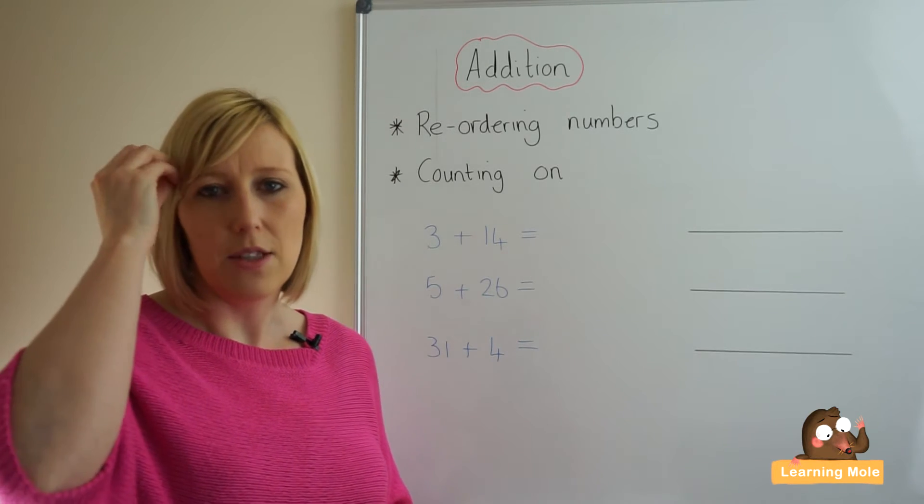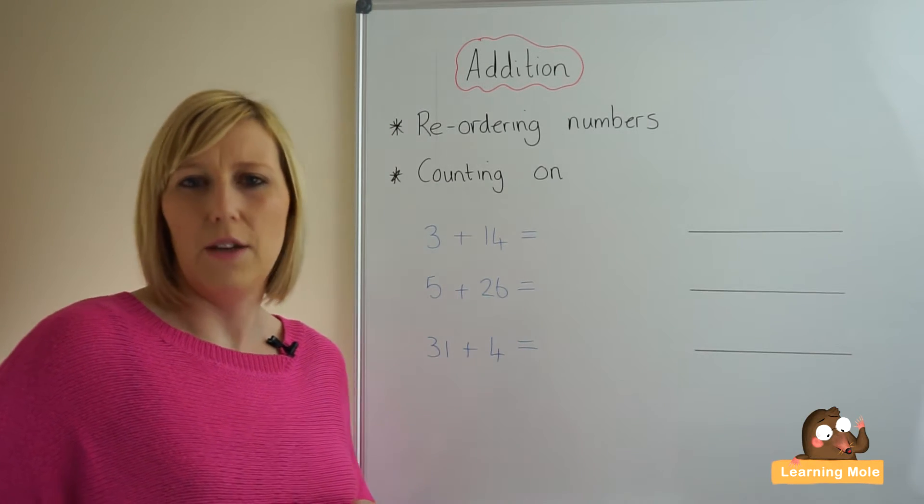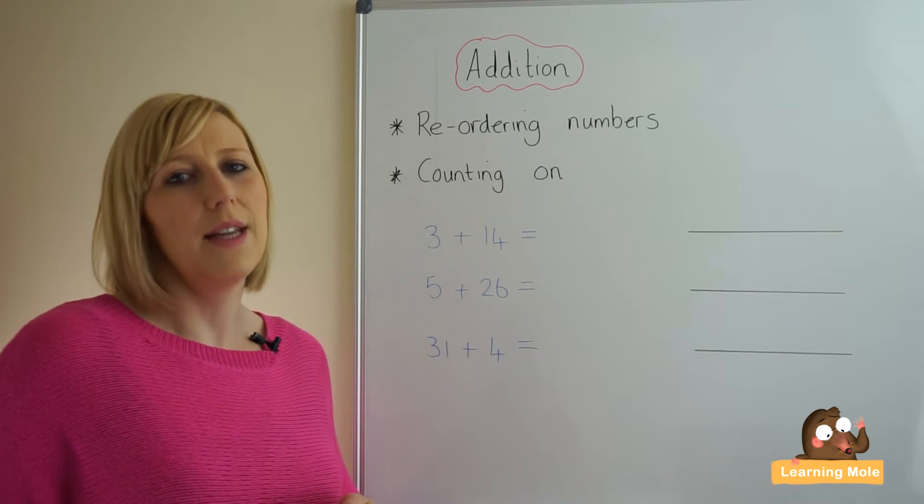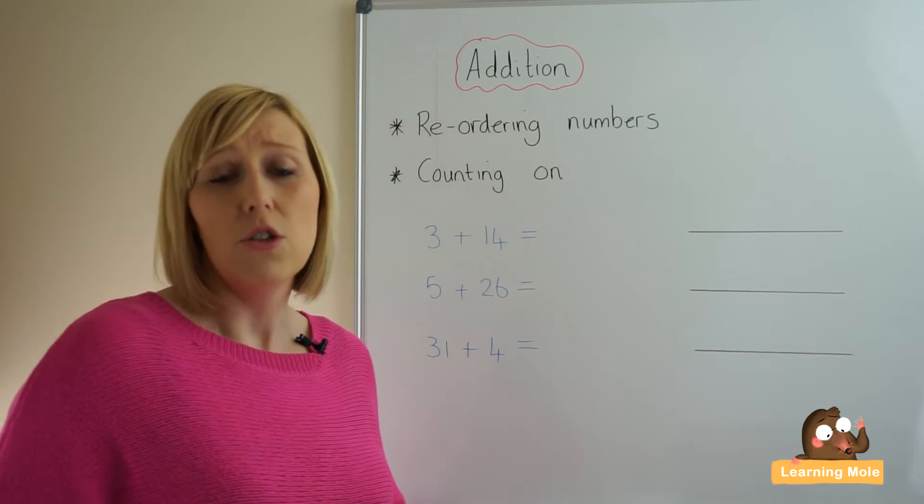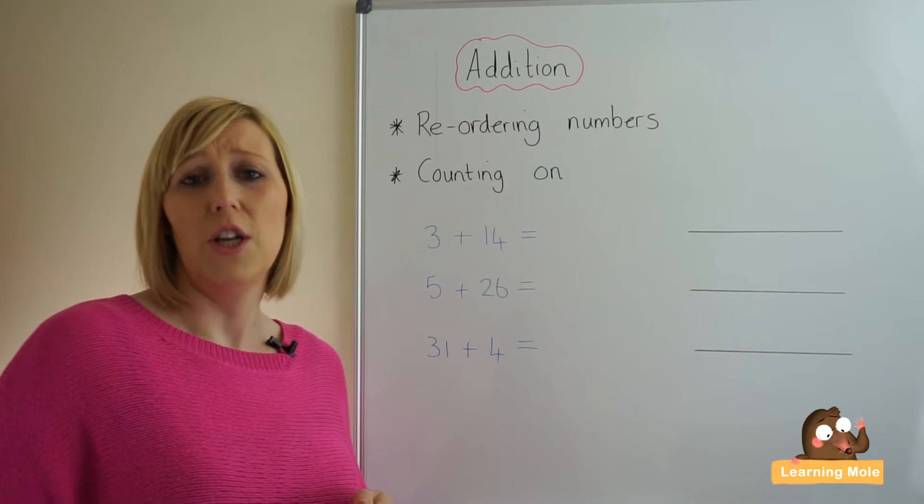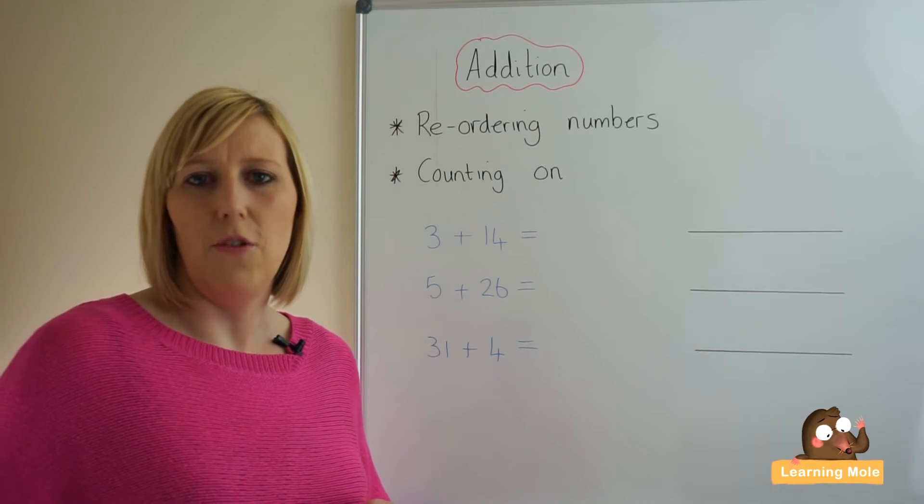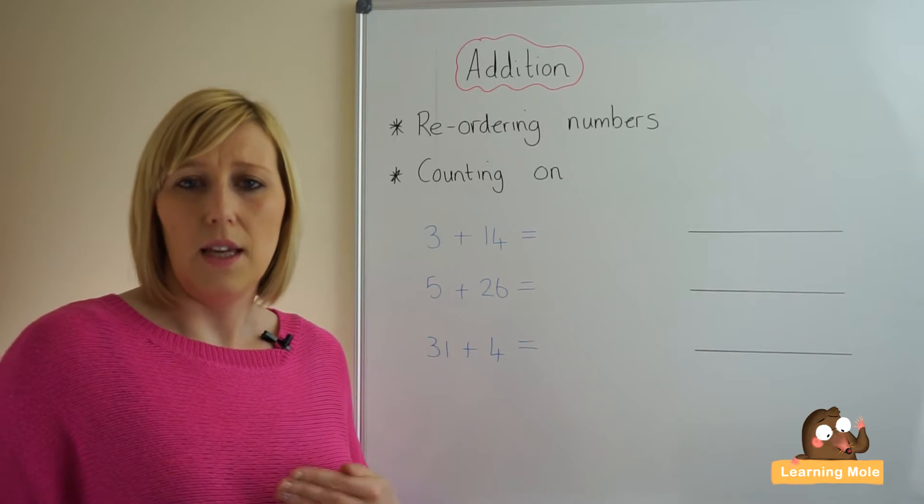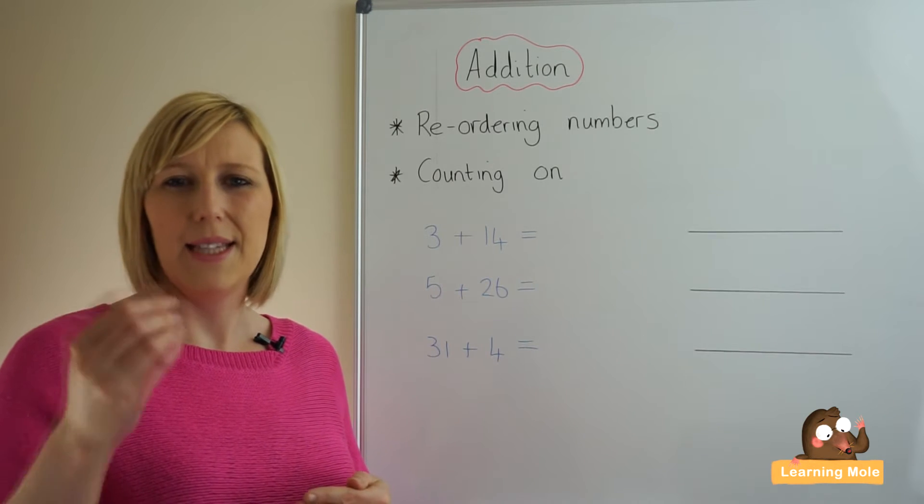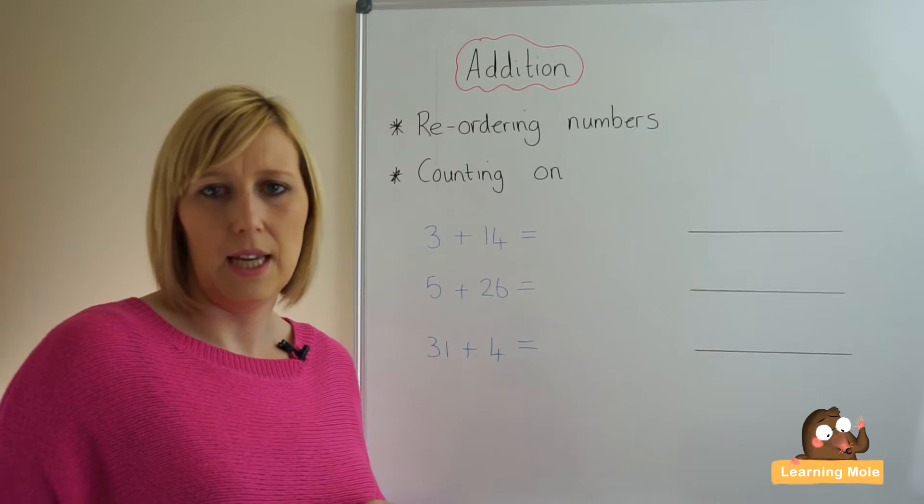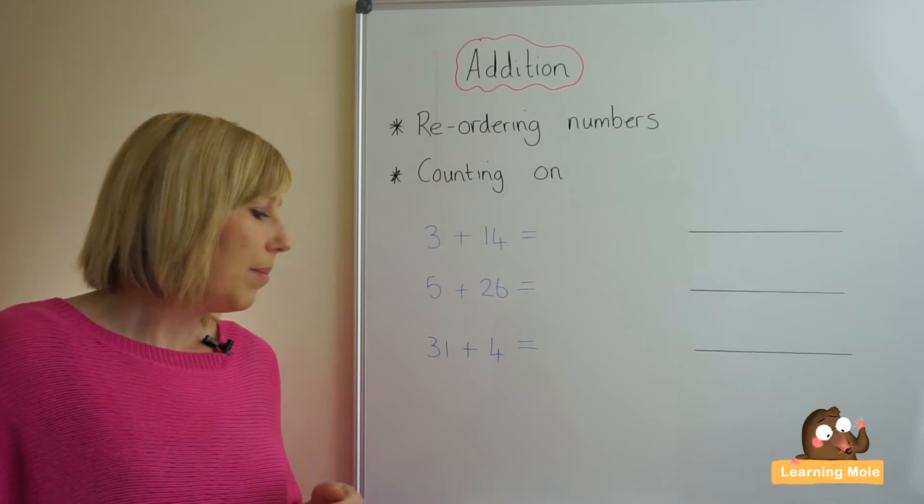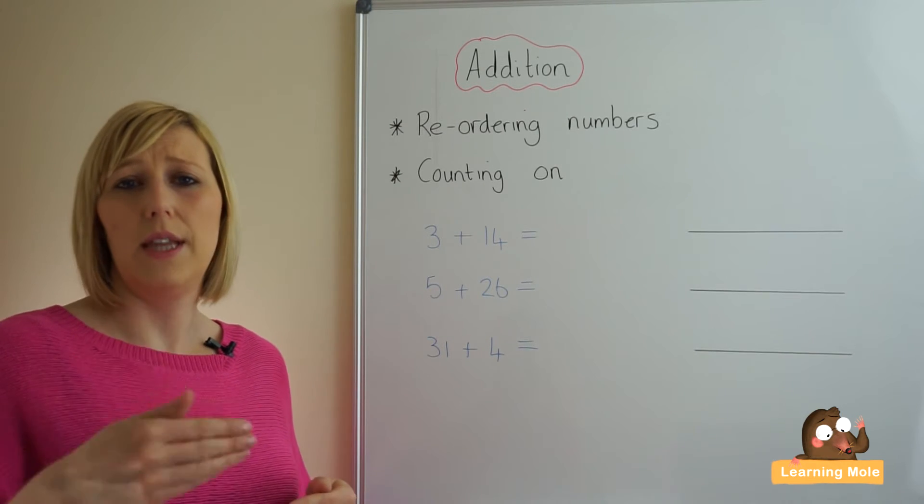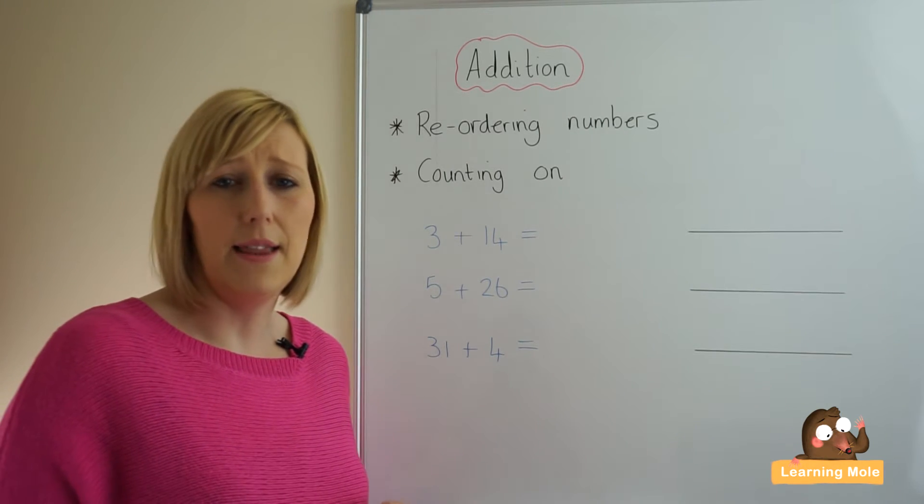I have drawn on the whiteboard some blank number lines and it is absolutely fine to allow your child to record their mental thinking on something like a blank number line initially. But then you want to progress to moving away from that recording because of course mental maths is all about focusing in that mental capacity. It is not about doing a written method. But it is absolutely fine to allow your child to start recording in a written form so that they can actually think about what they want to do in their heads and you can actually see their thinking.